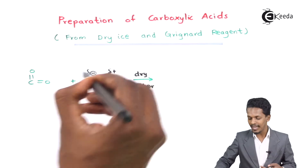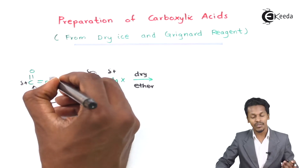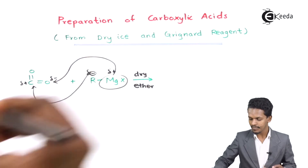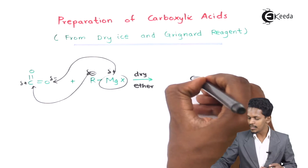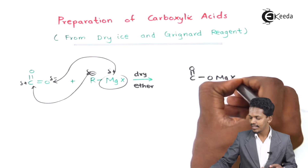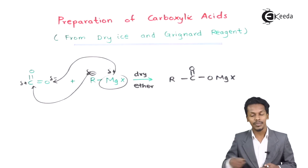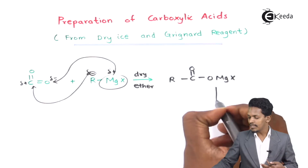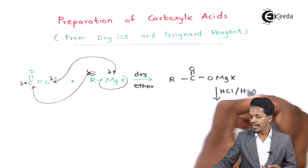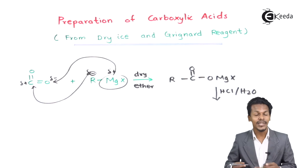So the alkyl group will try to attack the carbon which is partially positive, while the oxygen with partial negative charge will be associated with MgX. Because of this we get the product: C=O with O-MgX, and the alkyl group attached to the carbon. On further reaction with HCl in presence of H2O, we find that the adduct formed is converted into carboxylic acid.